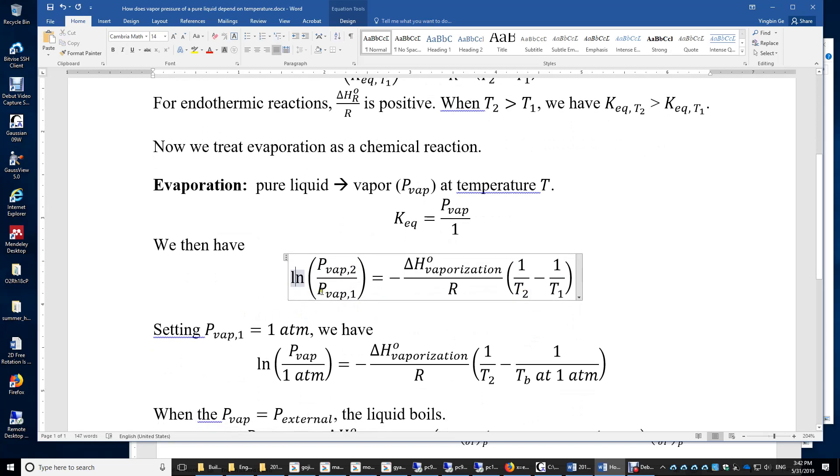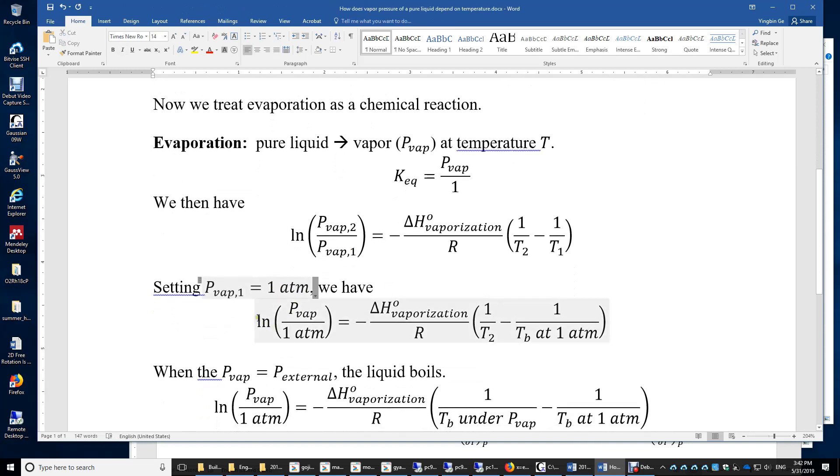We can set Pvap,1 to be 1 atm, and then we have this new equation which tells you how to determine the vapor pressure at a given temperature. You do need to know the enthalpy of vaporization and the boiling point of that liquid.